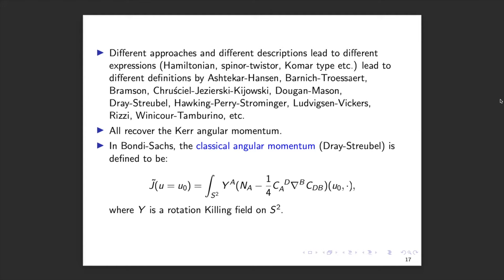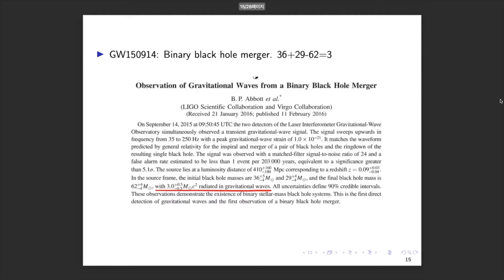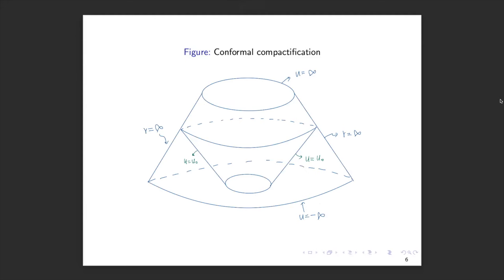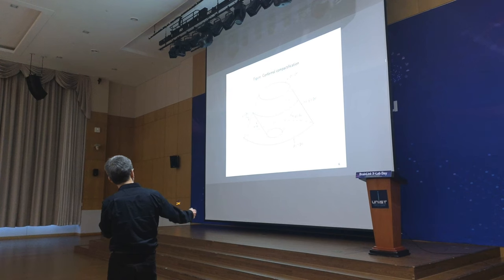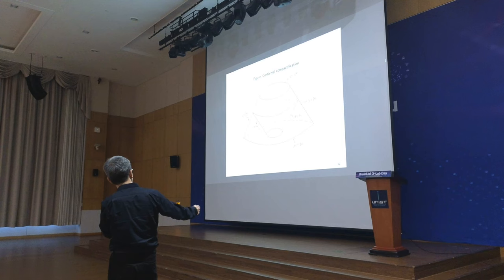The classical angular momentum is defined as follows. It must involve this angular momentum aspect N_A, and whenever you talk about angular momentum, you need a rotation Killing field on S². You measure the angular momentum with respect to this Killing field. There is also a term involving C_{AB} — the shear — where you take a covariant derivative and multiply by it. This gives the angular momentum at the u = u₀ cross-section, which is a particular slice of future null infinity. This is called the retarded-time angular momentum.